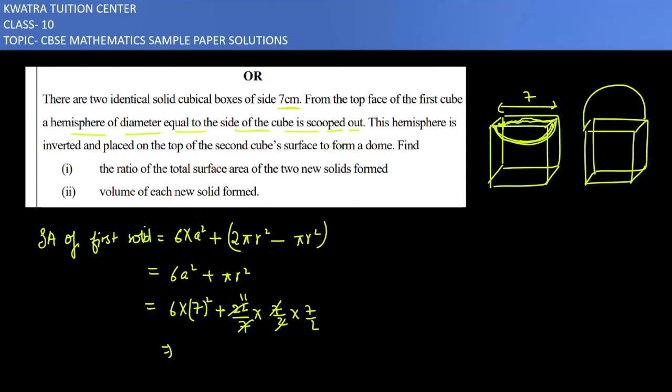So 7 is 7, 2 is 22 over 11. And 77 over 2 will give you 38.5. And here, 6 into 7², that means 49 into 6, plus 38.5. Adding both of them, you will get the result as 332.5 cm².